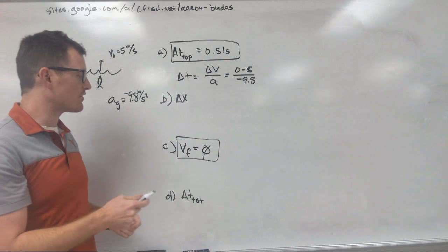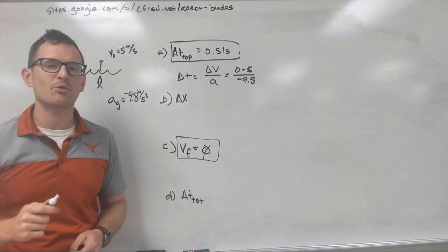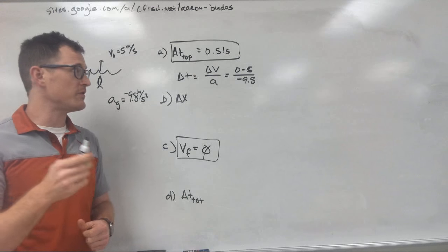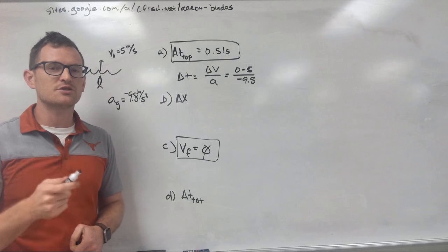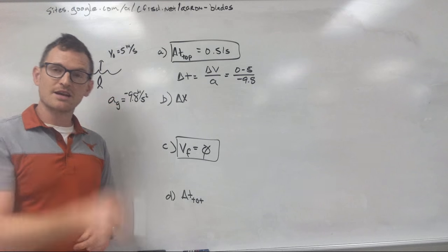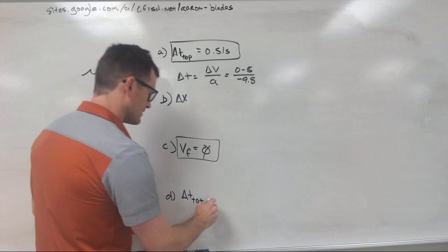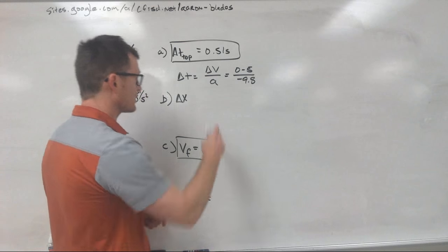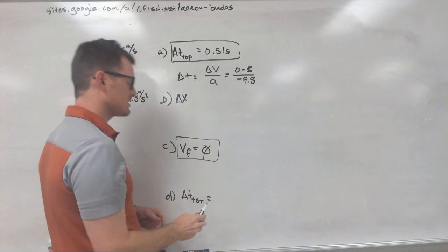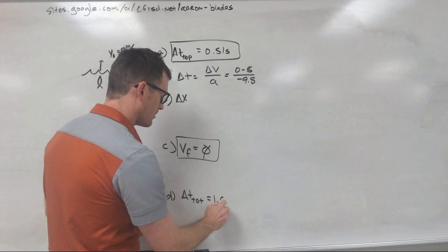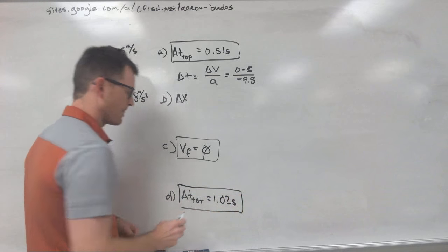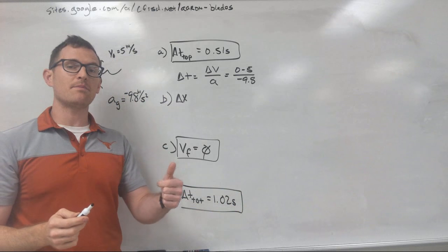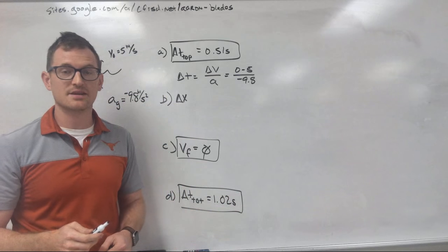Again, we can solve another part of this problem without doing any more math. In order for the fish to have traveled up 0.51 seconds, it means that it will also fall the same amount of time. It goes up and comes back down. So our delta T total is going to be two times this number, or 1.02 seconds.